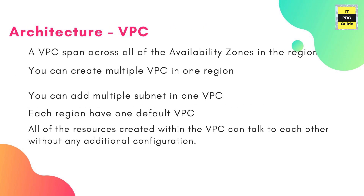Let us connect VPC with the region and availability zone concepts from the previous video. A VPC spans across all availability zones in a region. So when you create a VPC in a region, for example US East, it will be available in all availability zones in that region. You don't need to create multiple networks for redundant instances running in other availability zones.